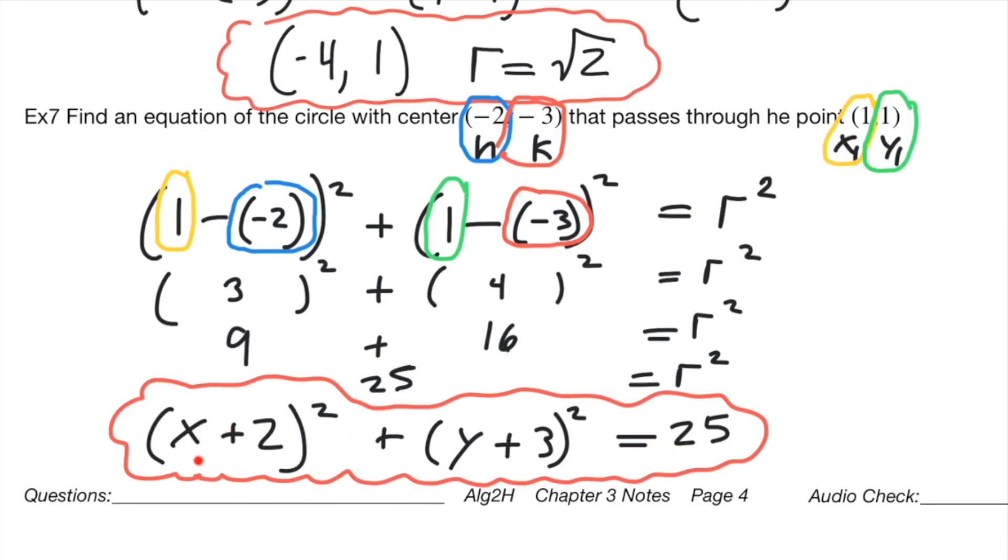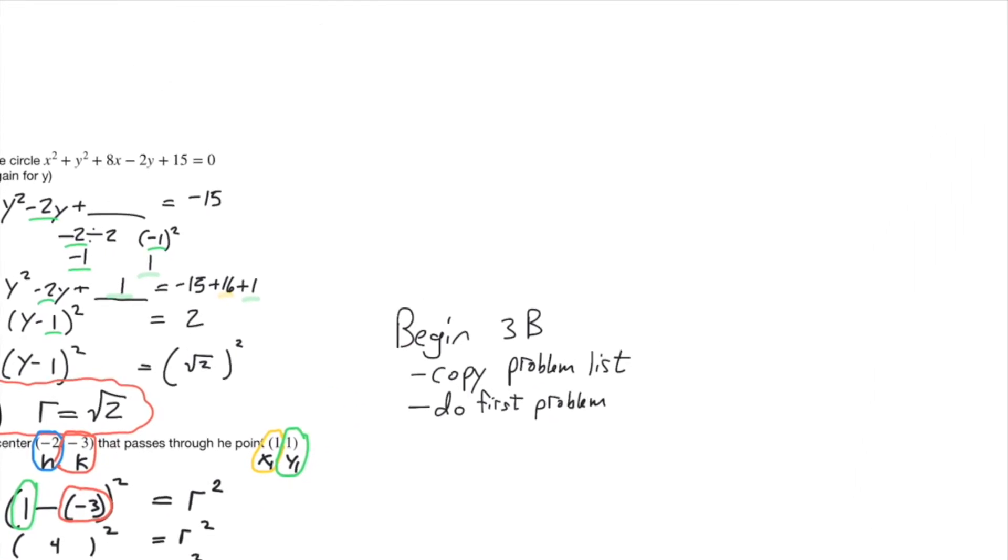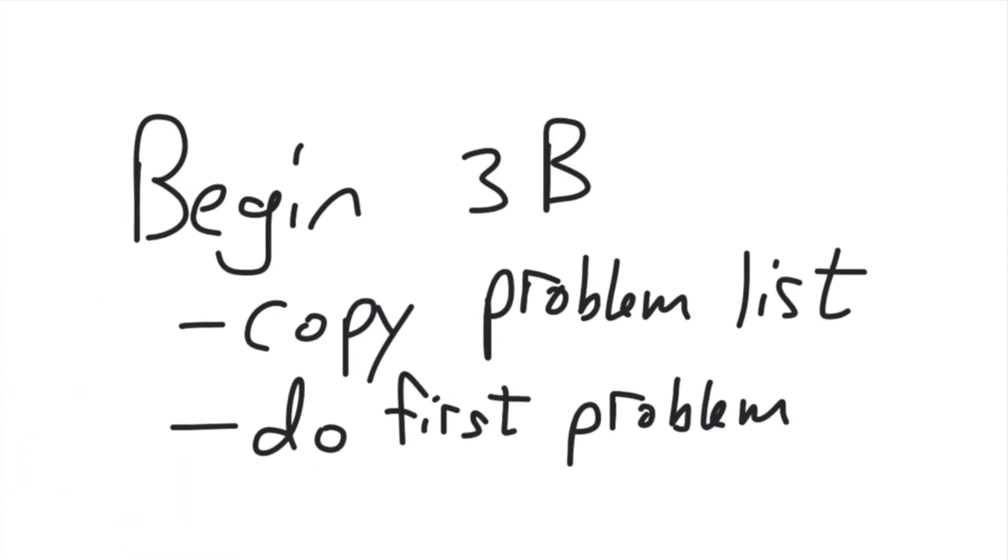Here's an equation: x plus 2 squared. Remember, it's the opposite of what you might expect. h is negative 2, so it's going to be plus 2. And then y plus 3 here squared is equal to 25. And you don't have to go any further than that. Those are all the notes. Go ahead and begin assignment 3b. I want you to copy the problem list into your composition book and then do the first problem. And I will see you in class.